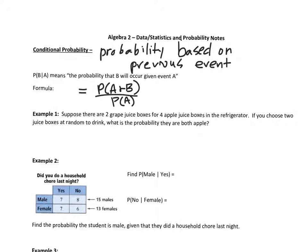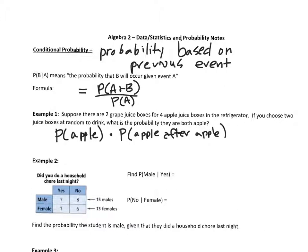You're going to take the probability that you pick an apple juice box and multiply it by the probability that you pick an apple juice box after one apple juice box is already gone. The first probability is four out of six. Then you remove an apple juice box, so now you have three apple out of five total. Multiply: that gives 12 out of 30, which reduces to two-fifths.